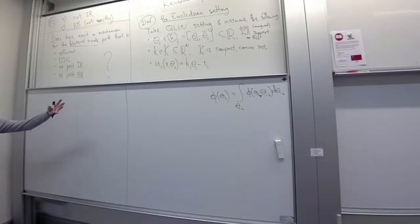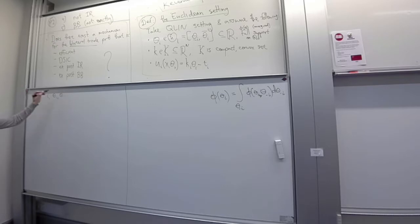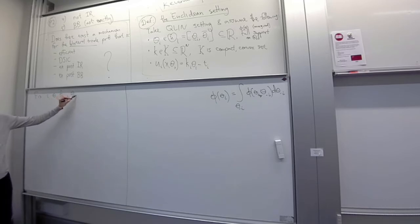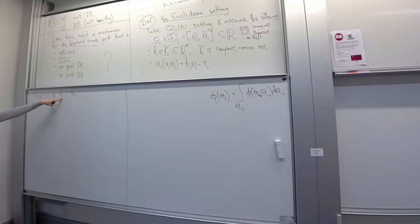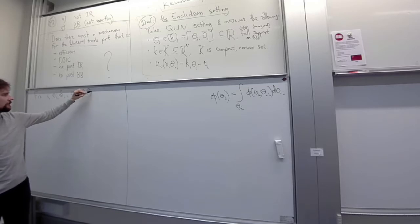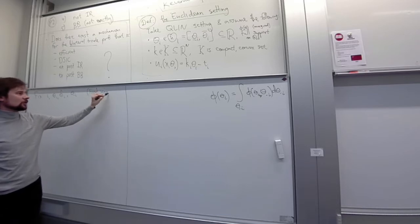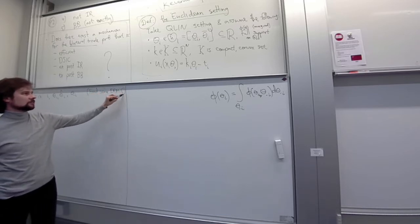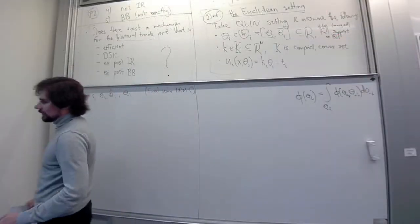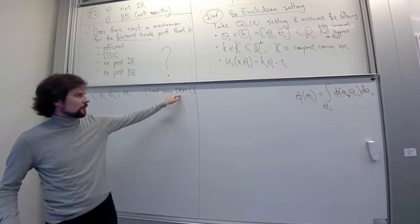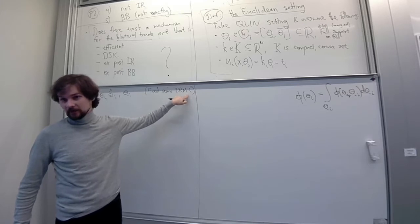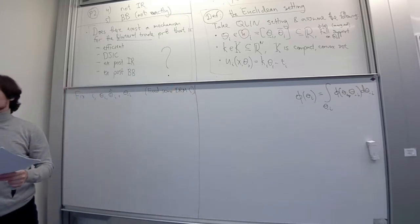As I promised, we'll head into the forest and do seemingly random things. First, fix some arbitrary player, their type, a possible deviation theta-hat, and a profile of other players' types theta minus i. We will write out the incentive constraint for this player for deviating to that other report. We have already fixed some direct revelation mechanism gamma, since by the revelation principle this is without loss.